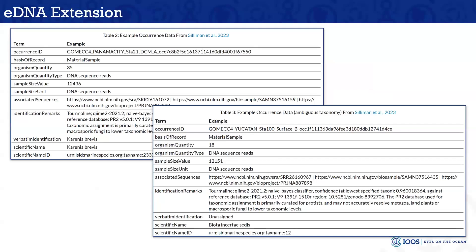On the line of extensions where you can start adding additional metadata about specific occurrences, we have this specific eDNA extension. We're starting to include information about the sample size, sample size unit, the DNA sequence reads, associated sequences, and the scientific name. In some specific cases where you might not know the specific taxonomy, you can still share that data using a specific scientific name — the biota incertae sedis — to say we don't quite know what it is but we still want to share this data. Maybe later on, the raw observations can be reprocessed where we actually have information about that specific species.